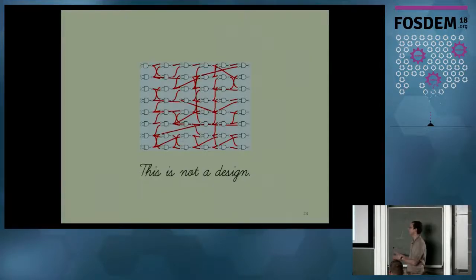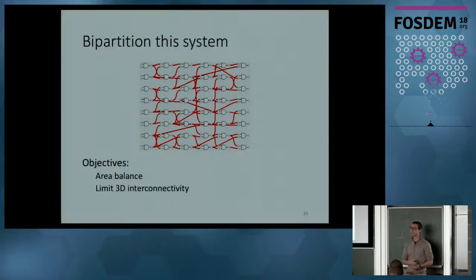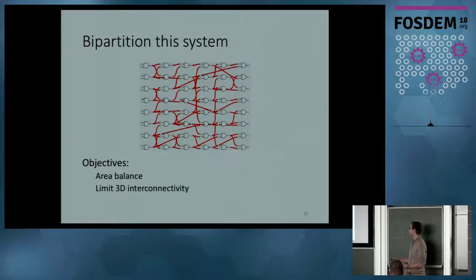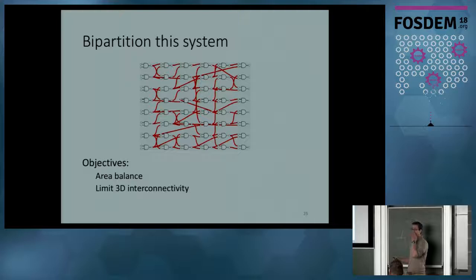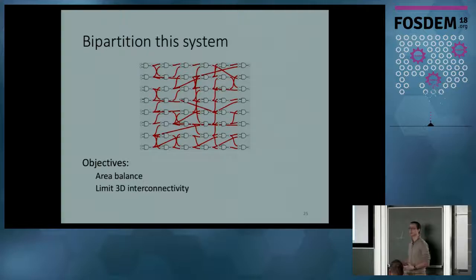Let's see how it works with an example. Let's say this is the representation of a design. The objective is to simply split it in two — what we call a bipartition — and we want those two partitions to be the same size: a balanced bipartitioning. One other objective is not simply to butcher the design randomly; we want to limit the 3D interconnectivity, that is, having as few nets crossing between layers as possible — cutting as few nets as possible when doing the partitioning.